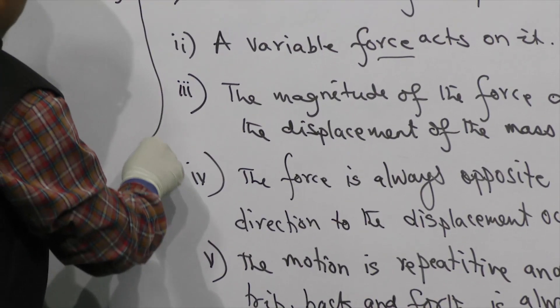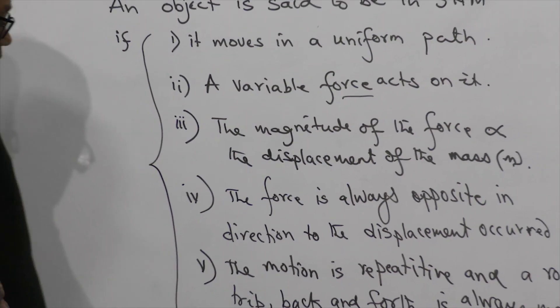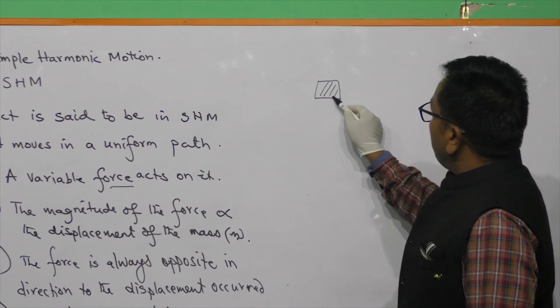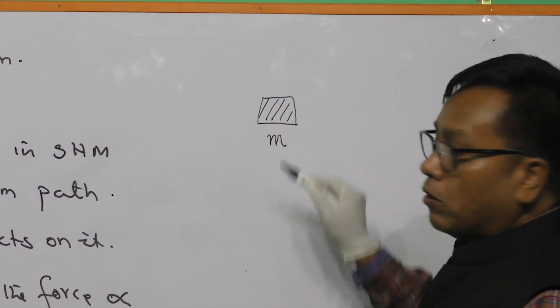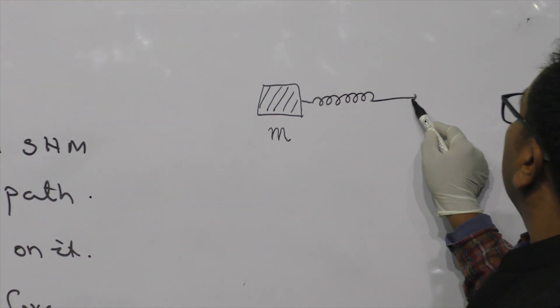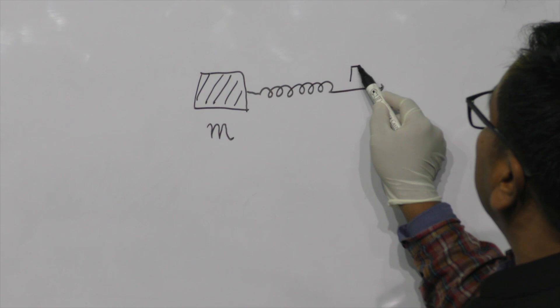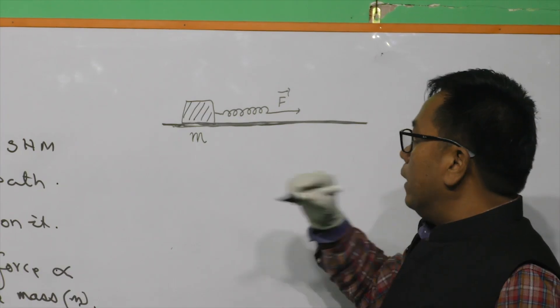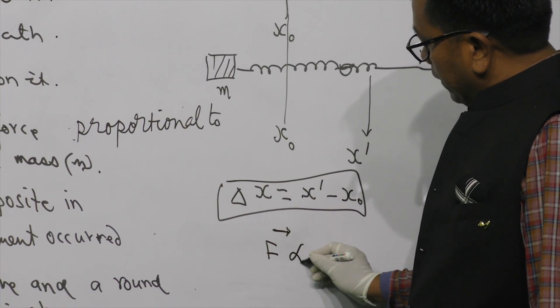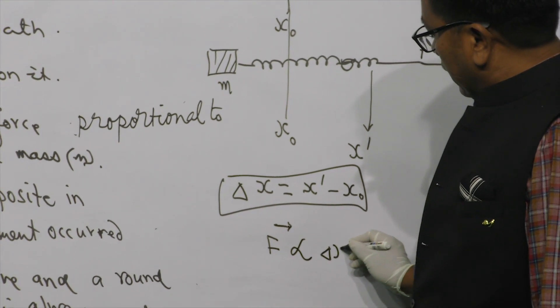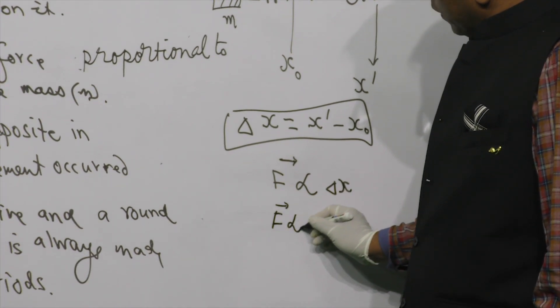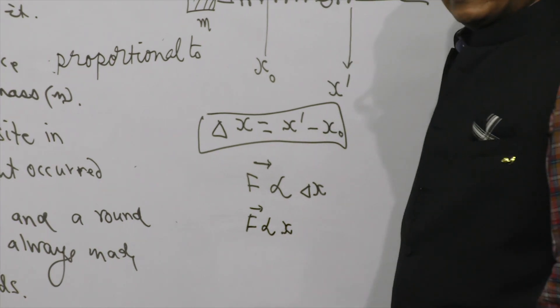So these are the conditions to be satisfied for a motion being said to be in simple harmonic. An object of mass M, suppose this is object of mass M. And now, with the help of a spring, if I pull it by the application of a force, this is a variable force which is being applied must be proportional to the displacement delta x. Or simply, I can also write this as force proportional to x, where x is the displacement.